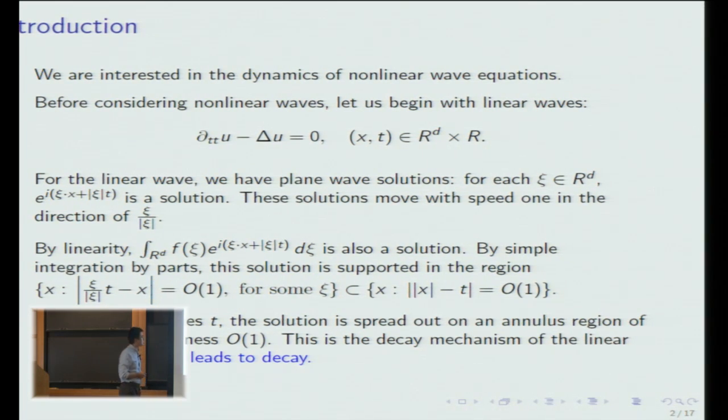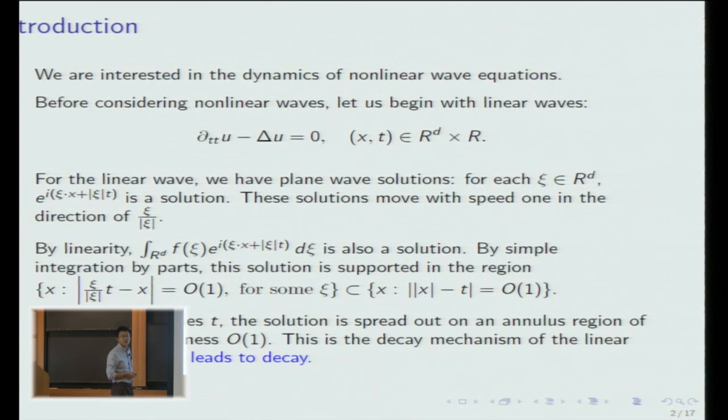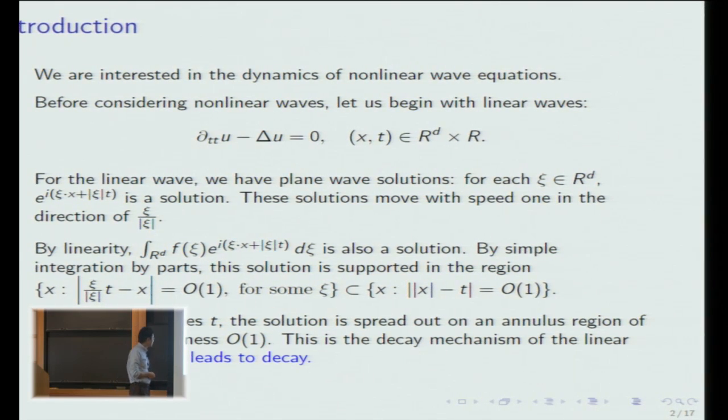And that annulus has area, in three dimensions, that annulus has area one over t, so your solution will decay with a fixed rate. This analysis works for all dimensions, but the decay rate depends on the area of the fixed sphere, which depends on dimension. So that's kind of the spreading effect of the wave, and that's the decaying mechanism for the linear wave, so dispersion leads to decay.